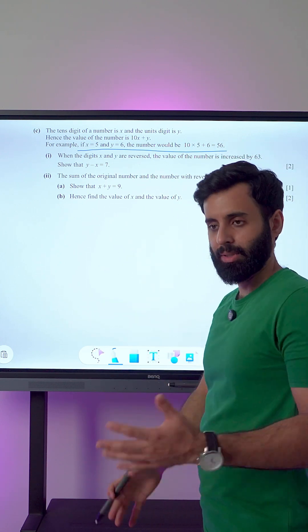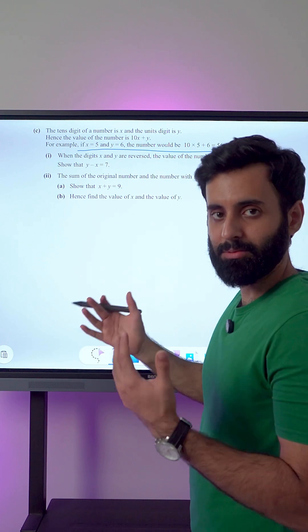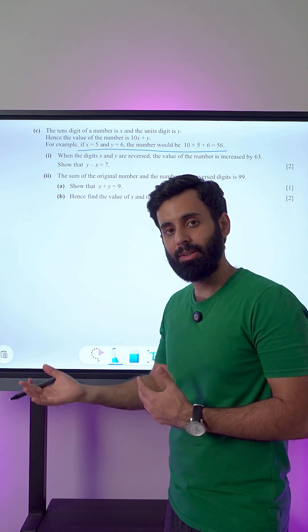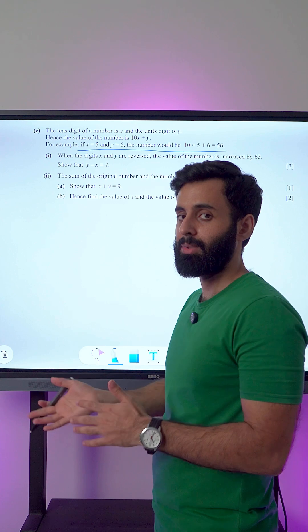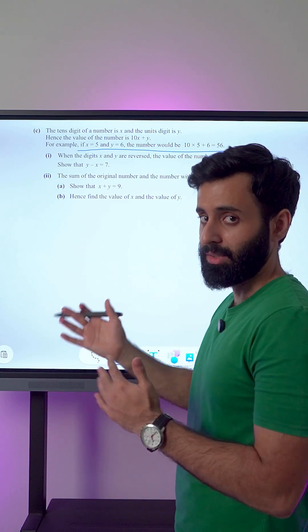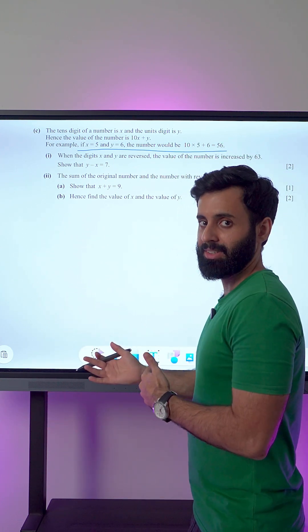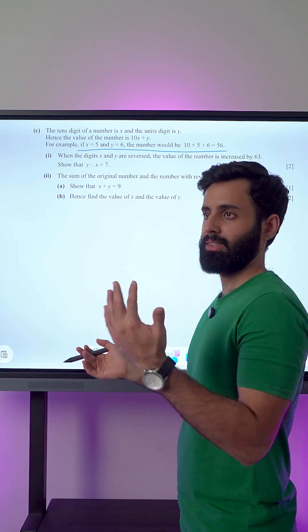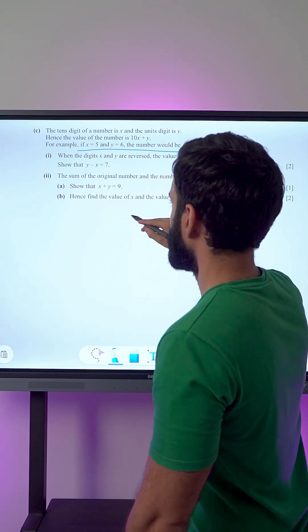5 is the 10th digit and 6 is the unit's digit. The value of 56 can also be obtained by multiplying 10 with the 10th digit - that means 10 into 5 - plus the unit's digit which is 6. So 50 plus 6 equals 56.